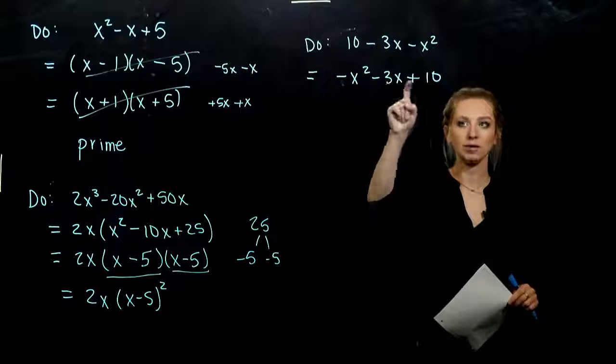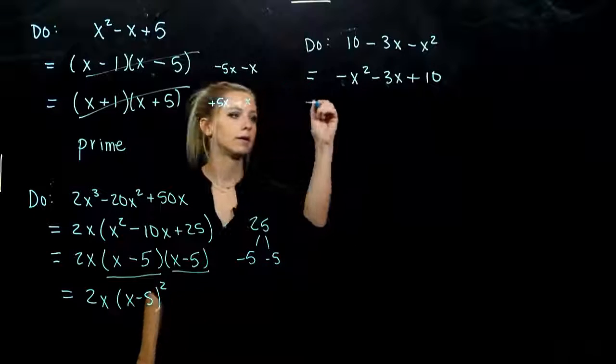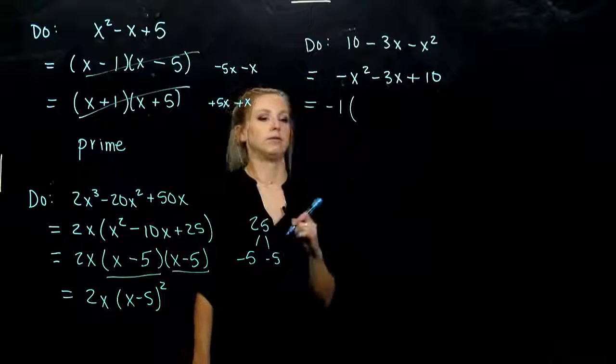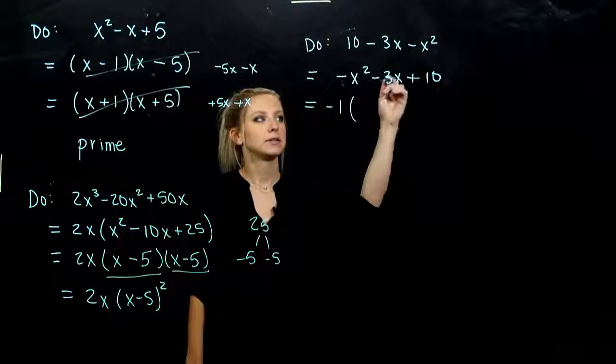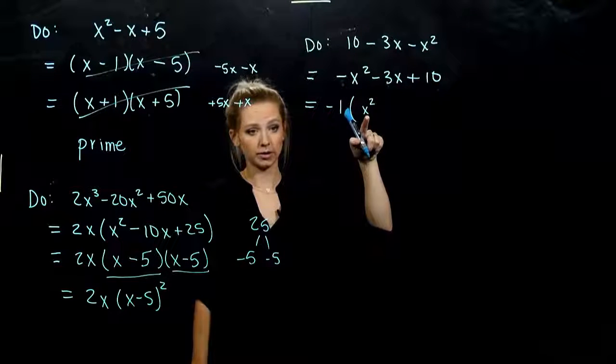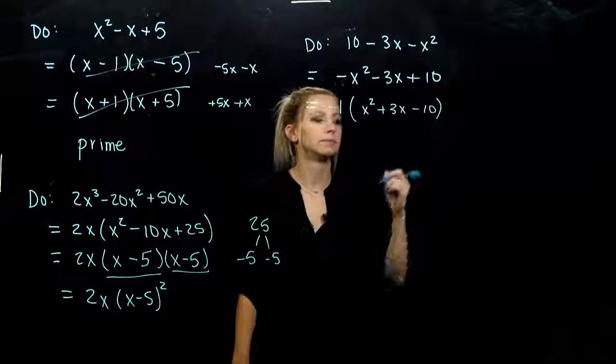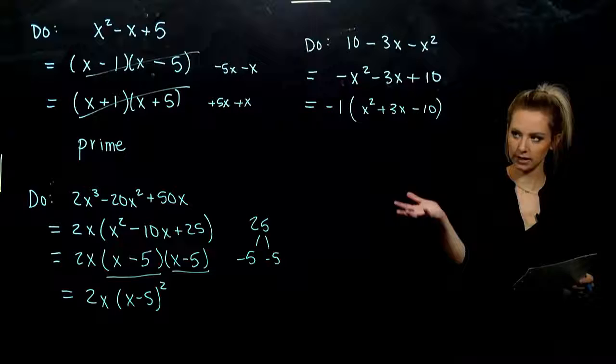But we haven't dealt with a negative out on the front. So between all of these, I can take out a negative, negative 1. When we take that out, every single sign is going to change. Now I've got x squared, which we know how to deal with, positive 3x, and negative 10.